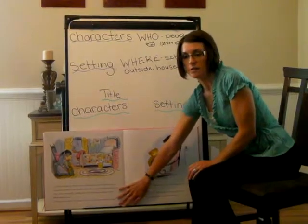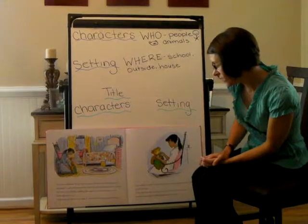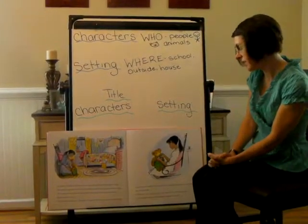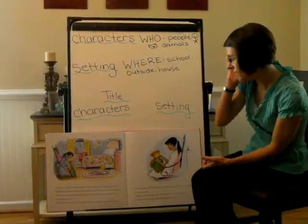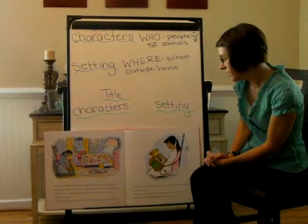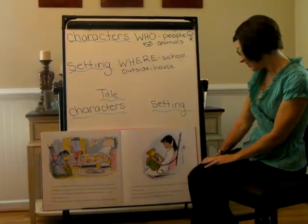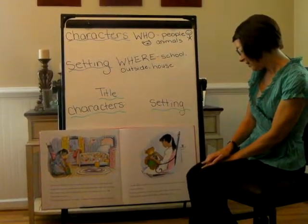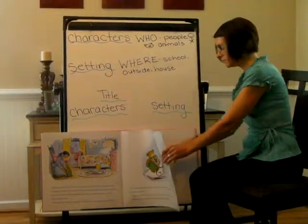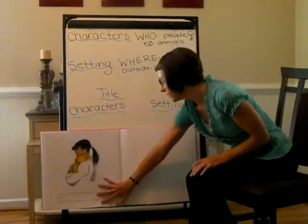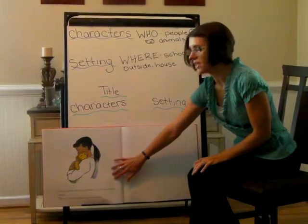Now, where is the story taking place? Very good, in Lisa's apartment. Corduroy blinked. There was a chair and a chest of drawers, alongside a girl-sized bed, stood a little bed just the right size for him. The room was small, nothing like that enormous palace in the department store. 'This must be home,' he said. 'I know I've always wanted a home.' Lisa sat down with Corduroy on her lap and began to sew a button on his overalls. 'I like the way you are,' she said, 'but you'll be more comfortable with your shoulder strap fastened.' 'You must be a friend,' said Corduroy. 'I've always wanted a friend.' 'Me too,' said Lisa, and gave him a big hug.